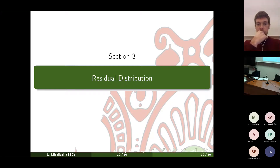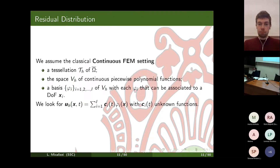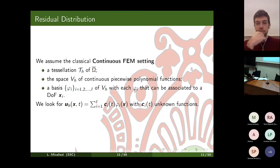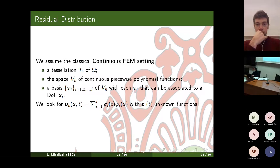Now we discuss residual distribution, our reference numerical framework for solving the resulting system. We assume the classical continuous FEM setting: a tessellation of the space domain using a family of non-overlapping polytopals, the space V_h of continuous piecewise polynomial functions of fixed degree, and a basis such that each basis function is associated to a degree of freedom located in the space domain. We look for the approximated solution as a linear combination of these basis functions through coefficients c_i which depend on time.